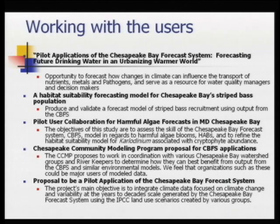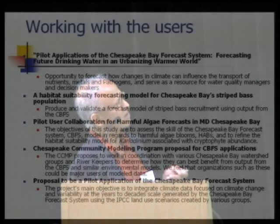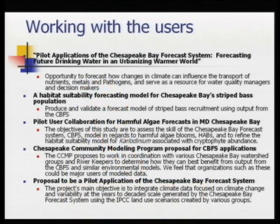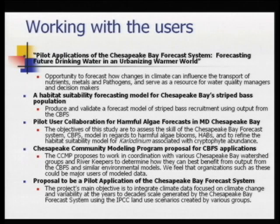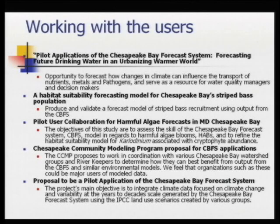We have engaged user groups like the Baltimore Drinking Water Supply Regulatory Board, a habitat-suitability model for watermen that deal with striped bass on a daily basis, and people who collect data for harmful algae in the Chesapeake Bay. This is a big problem from the Gulf of Maine to the Gulf of Mexico to the west coast, and it's a global issue. With global warming and coastal population increase, there are lots of eutrophication issues and nutrient loadings which seem to be increasing harmful algal blooms everywhere. The Chesapeake community bay modeling involves river keepers and a group managing a 40-acre forest trying to use our forecast.